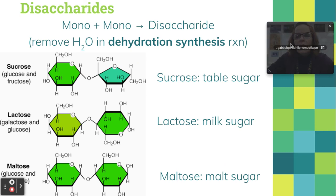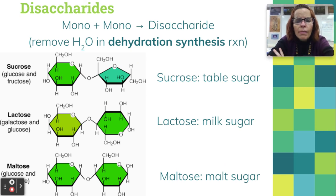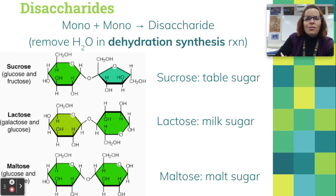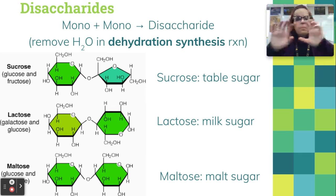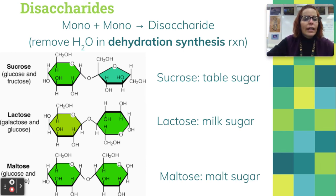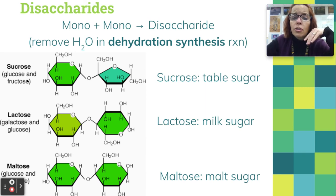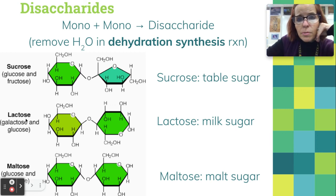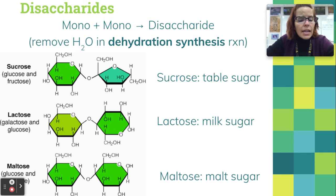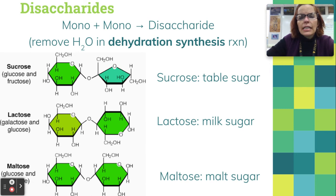Disaccharides are next. The prefix di means two, so we're going to put two monosaccharides together to make a disaccharide — building in complexity, which makes it anabolic, and so we have to do dehydration synthesis. Sucrose, which is table sugar, is made from glucose and fructose put together. Lactose — which some of you are lactose intolerant to — is made from galactose and glucose and is the sugar found in milk products. Maltose, or malt sugar, is made from two glucose molecules put together. During dehydration synthesis, water is removed and they stick together to make the disaccharide.